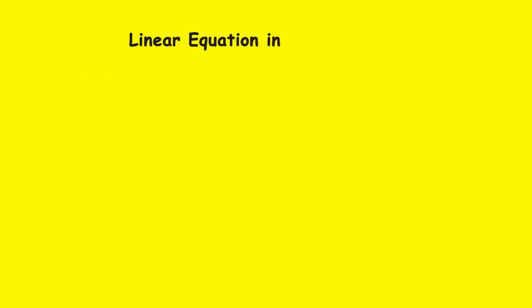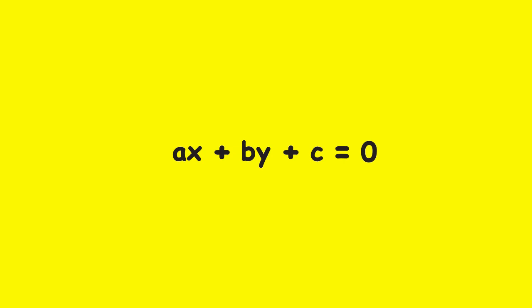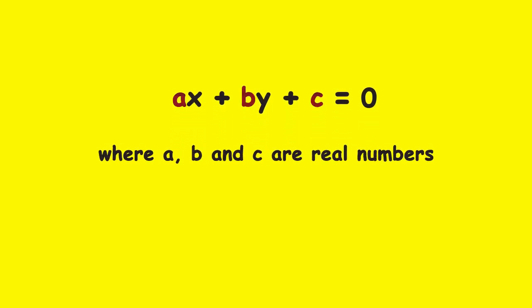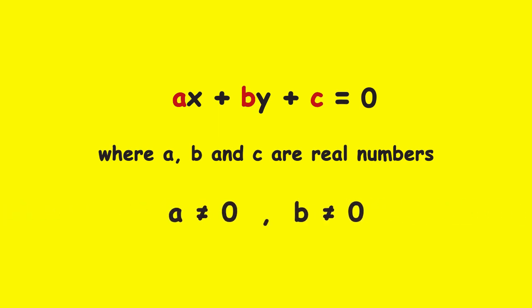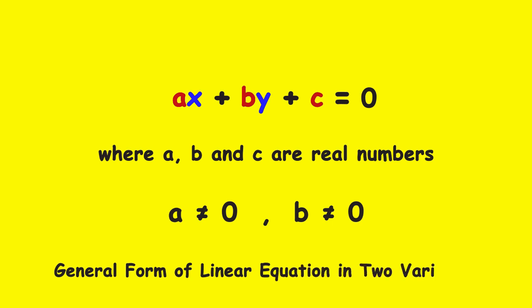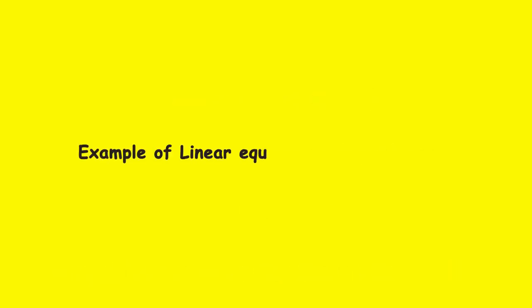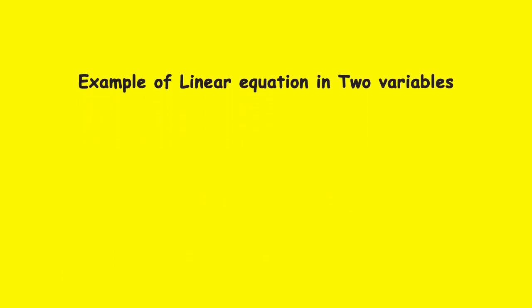Now let's understand linear equations in two variables. Consider the equation Ax plus By plus C is equal to 0, wherein A, B, and C are real numbers and neither A nor B is equal to 0. This equation has two variables, x and y, each having the highest power 1. This is the general form of a linear equation in two variables. An example is 4x plus 5y plus 60 is equal to 0.